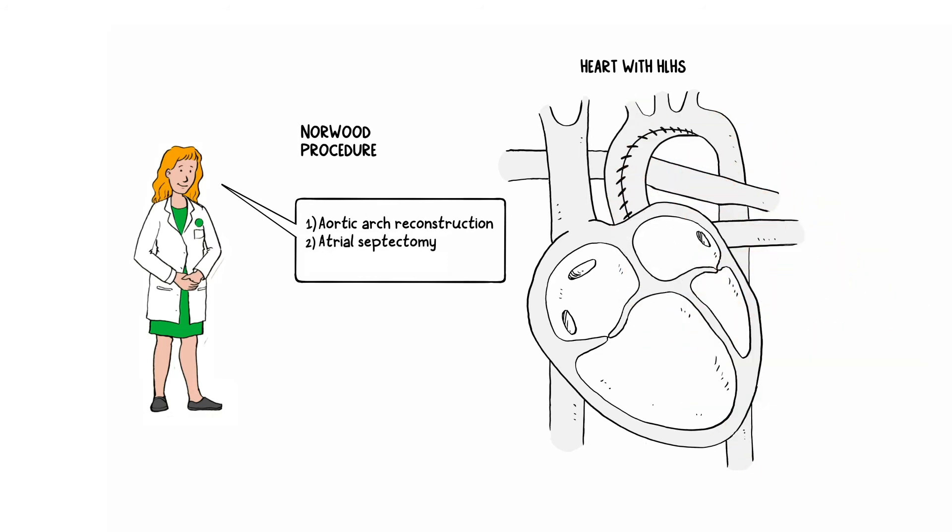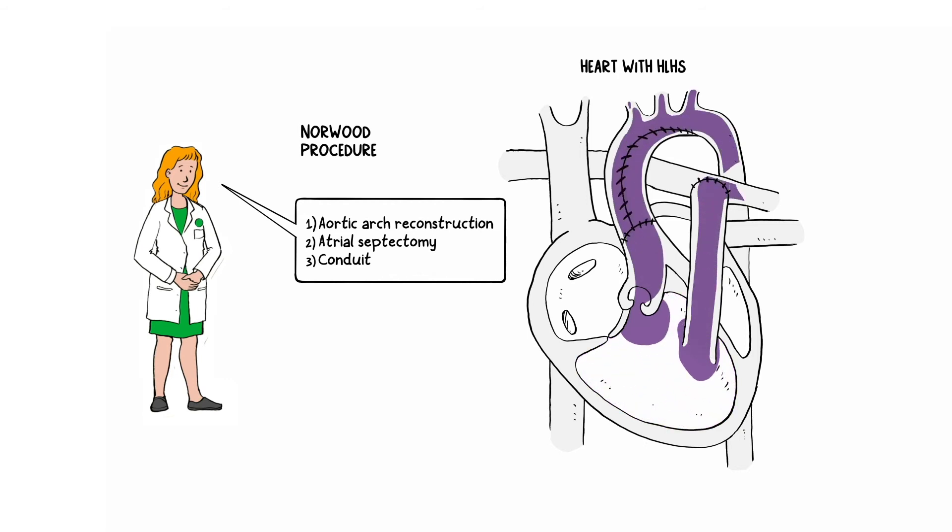An atrial septectomy, which removes the wall between the two atrial chambers to clear red blood's return from the lungs. Finally, a tube is placed between the right ventricle and lung artery, which creates a conduit for the right ventricle to pump blood to the lungs.